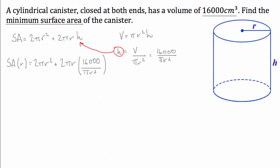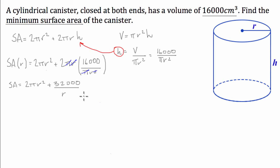Now we simplify to make differentiation easier. The π in the numerator and denominator cancel, and one factor of r cancels from r divided by r², leaving: SA(r) = 2πr² + 32,000/r. This is our objective function in terms of just one variable, and now we can differentiate it.